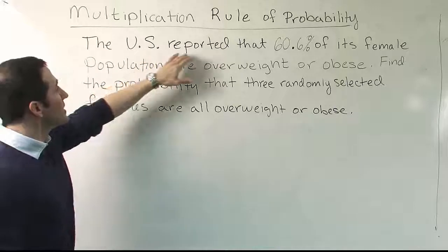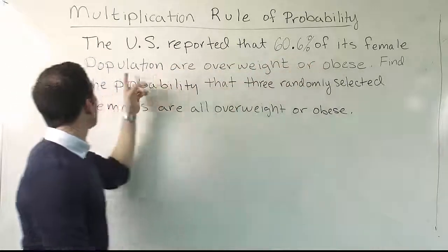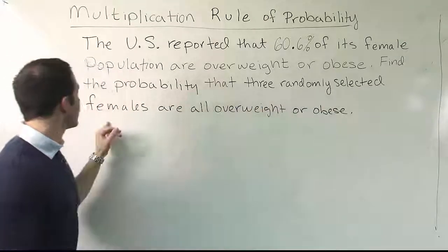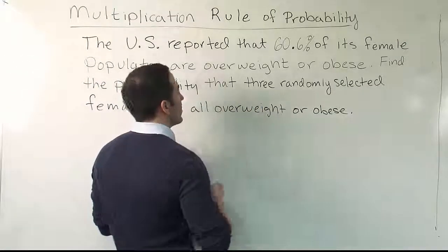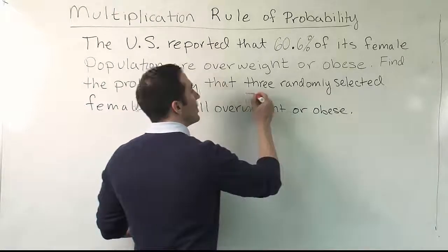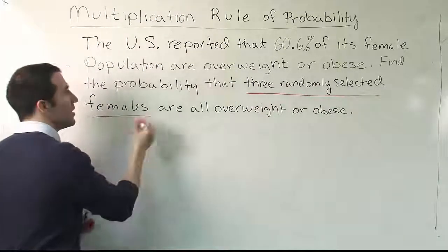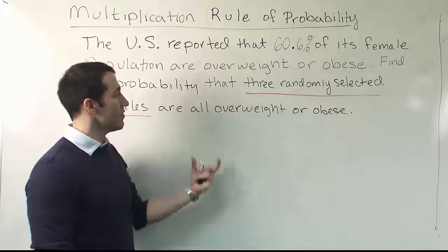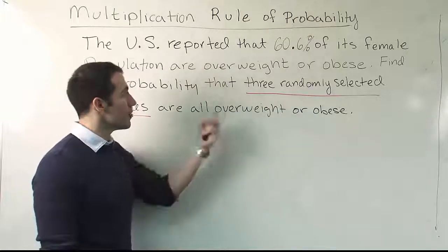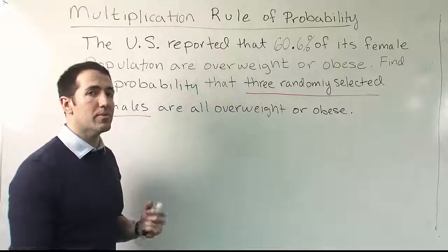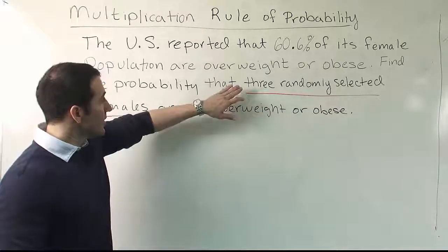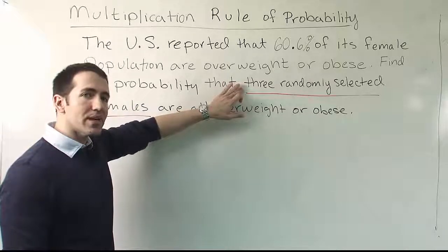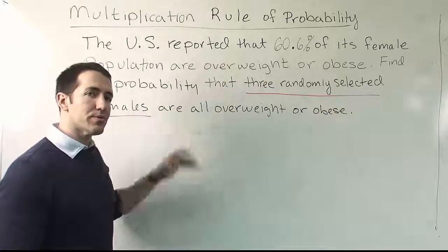In this problem, it says the U.S. reported that 60.6% of its female population are overweight or obese. Find the probability that three randomly selected females are all overweight or obese. We want to underline and pay attention to the phrase 'three randomly selected females.' The fact that we're choosing more than one woman means we're going to have to multiply the individual basic probabilities together. Any time it's more than one, you're going to be using the multiplication rule in some facet or another.